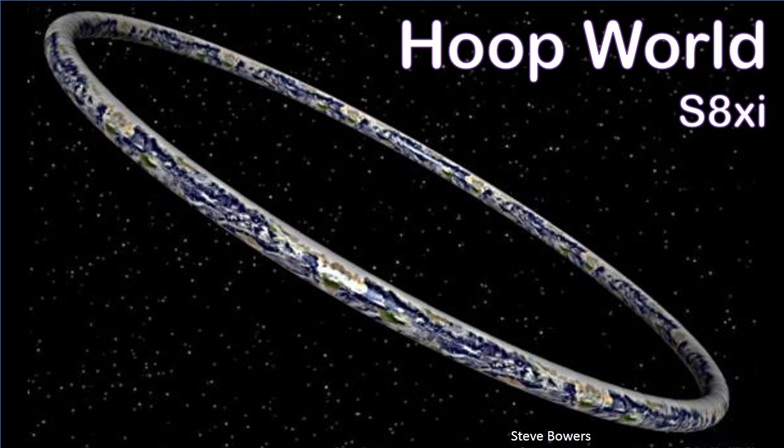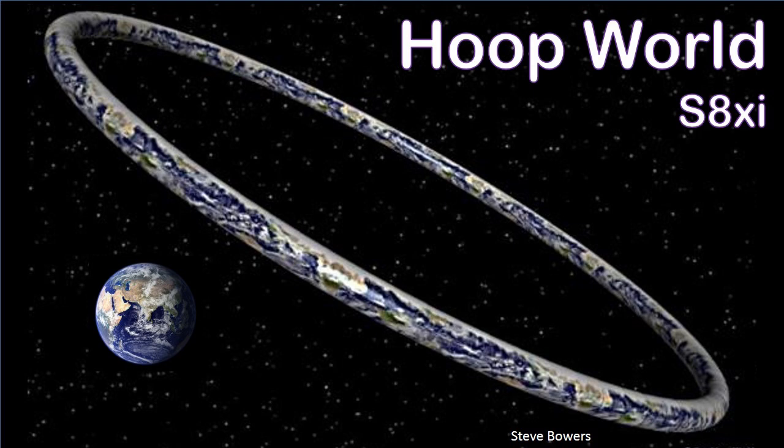Another example would be a hoop world or a Torus world, donut world, call it what you would. In this example, you'd have something that was about ten times the size of Earth. So long as the hoop's diameter is much wider than that of the actual ring itself, you're going to have perfectly normal gravity on the surface.